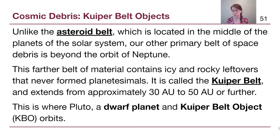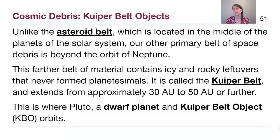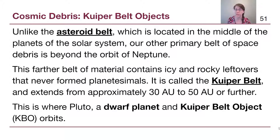The Kuiper Belt extends from about 30 astronomical units — 30 times farther from the Sun than Earth — out to about 50 or 60 astronomical units. This is where we find Pluto, which has been designated a dwarf planet since 2006 and would always be considered a Kuiper Belt object, or KBO, because it is in the Kuiper Belt.